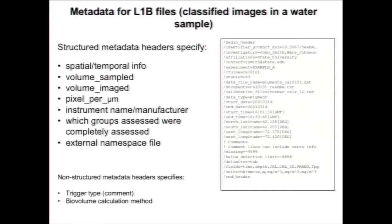Size information we have settled on to be included in such files includes Feret diameter minimum and maximum — basically the minimum and maximum length of the particles — as well as a measure of bio volume and area cross-section. All of these measures are outputs of IFCB data. The example here is specific to what an IFCB data file would look like, but we're also working toward data files that include information from instruments like the FlowCam.